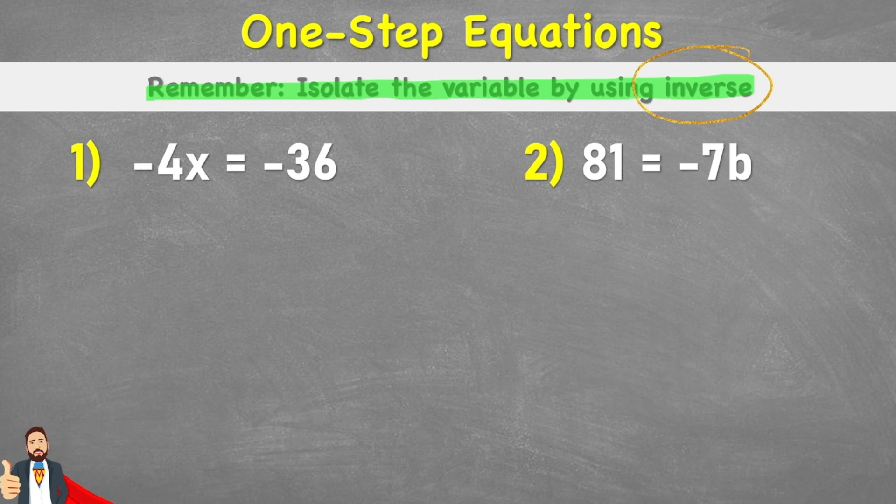So if we have negative 4 times x on this side, to cancel the negative 4, I'd have to divide by negative 4 as well. But what I've done now is I've made an imbalanced equation. Now this left-hand side is not equal to the right-hand side, because I've inputted this divide by negative 4. So to keep it balanced, I would have to divide by negative 4 on the right-hand side too. Now I have a balanced equation again.